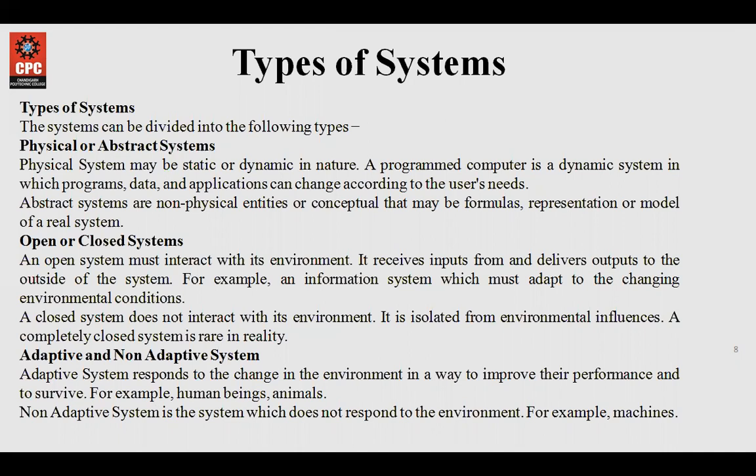To explain static versus dynamic with a simple example: suppose there is a computer center and it has a number of offices, chairs, and desks that facilitate the computers to operate properly. Now these offices, chairs and desks can be counted. A computer system and its parts are static in nature — they are not changing with time.